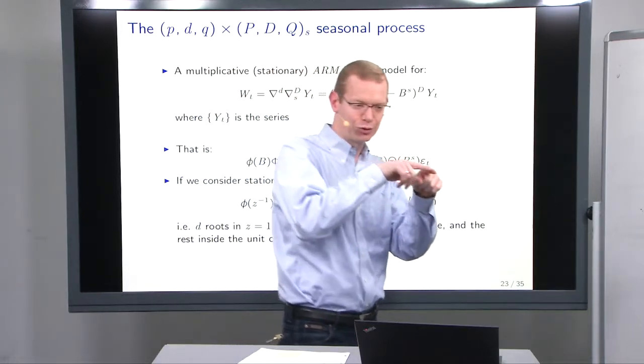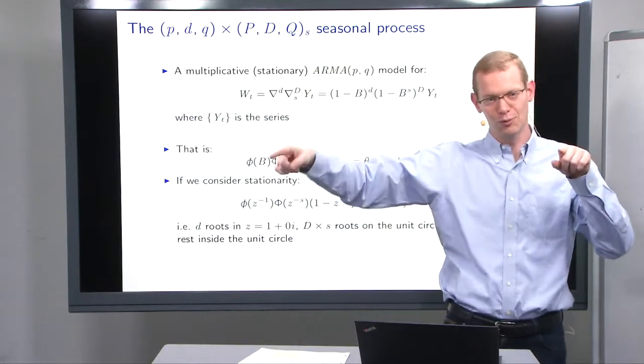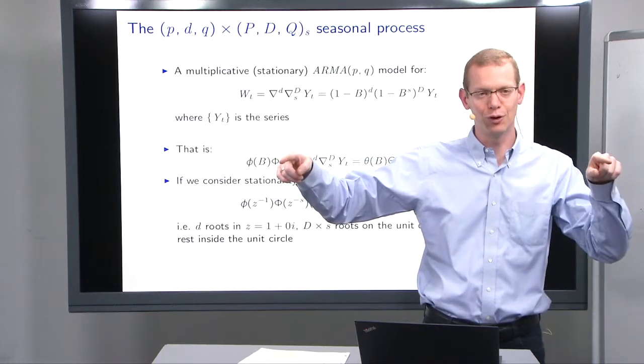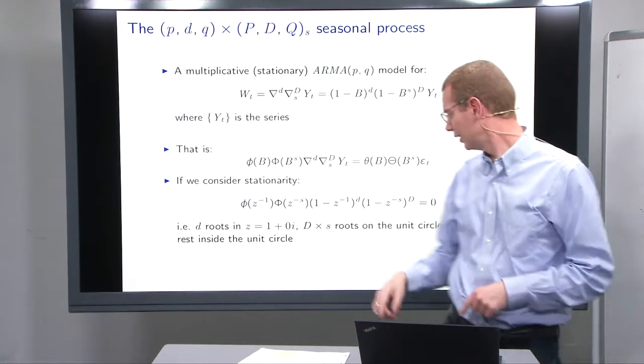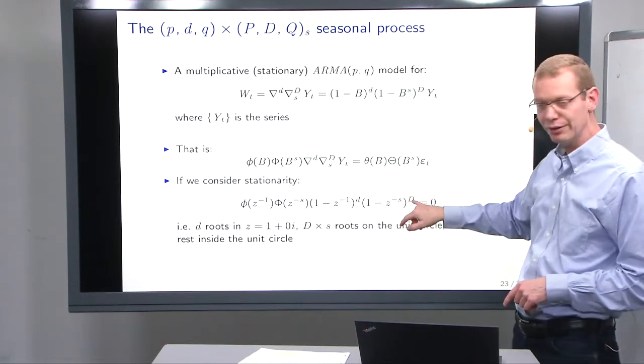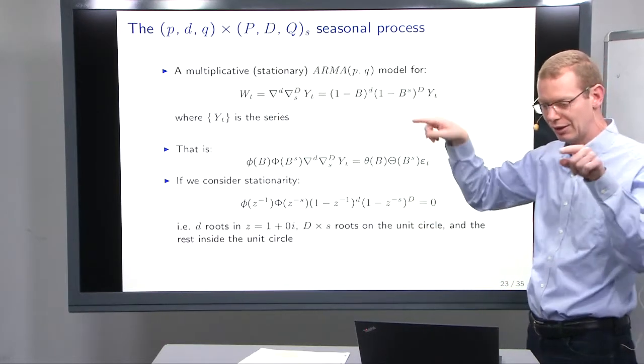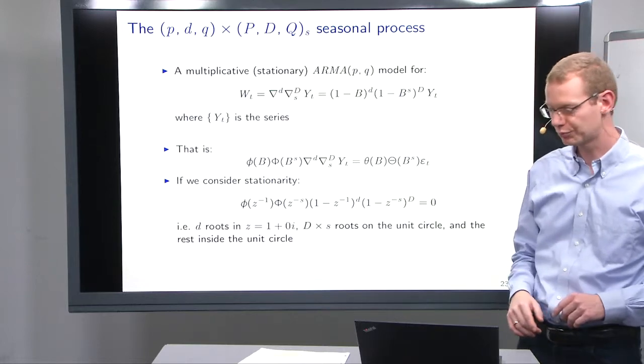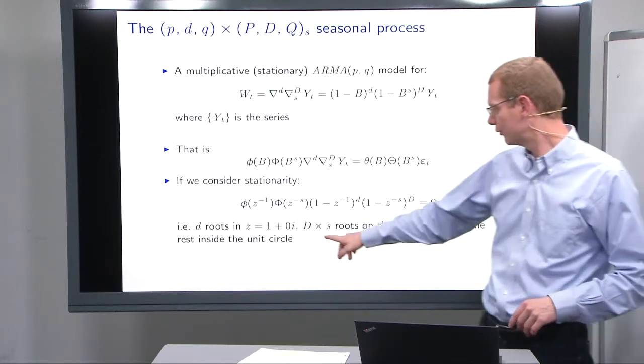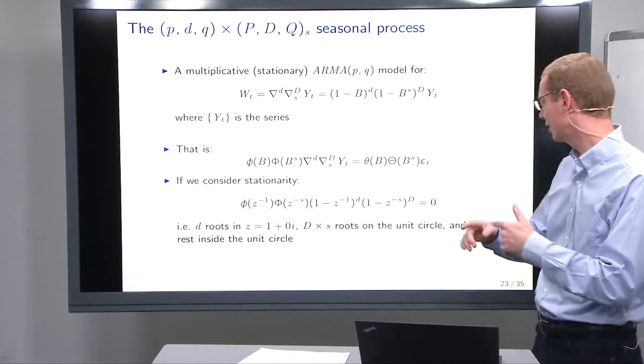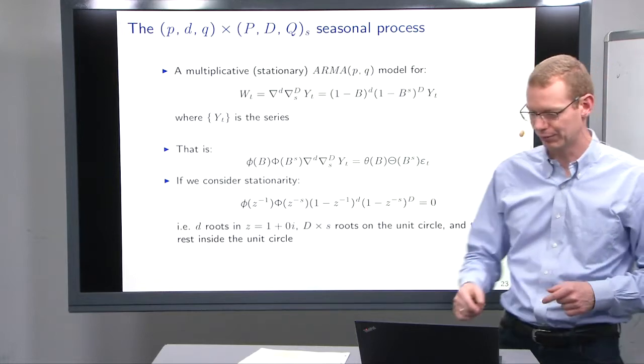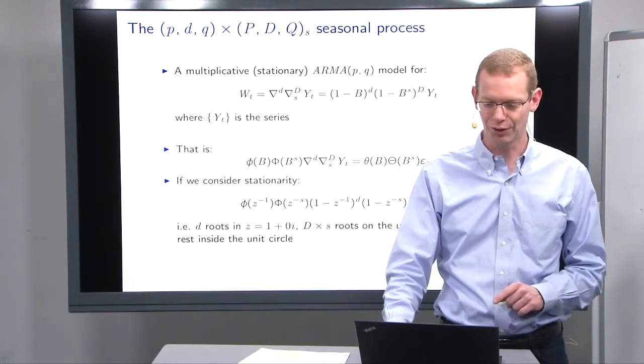So, you have two roots, then you have 1 and minus 1. And if you have four roots, we have them there as well. And then if D is greater than 1, then you will have multiplication of each of those. So, in total, you have D times s roots that are along the unit circle, uppercase D, as it's underlined.